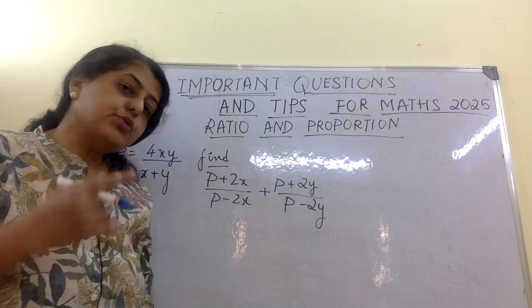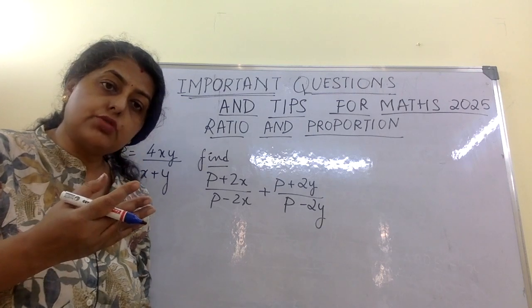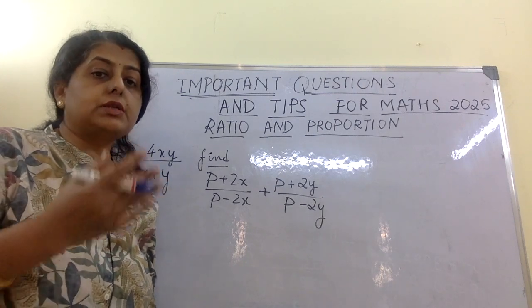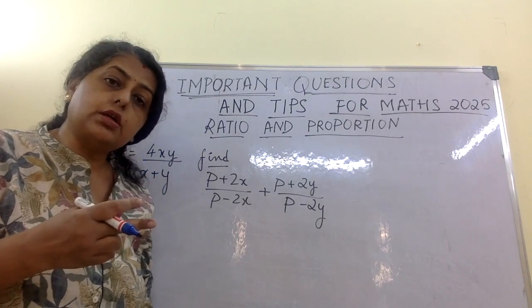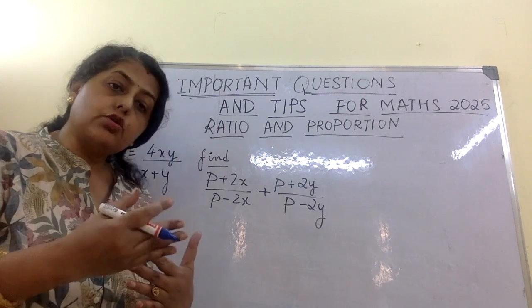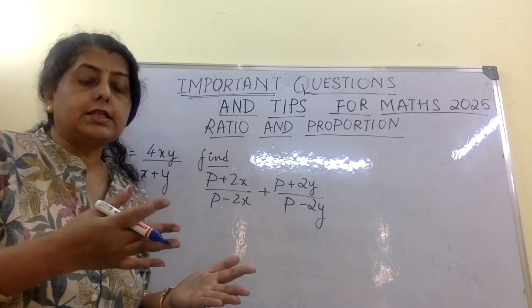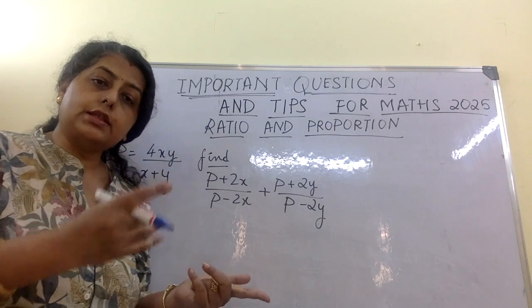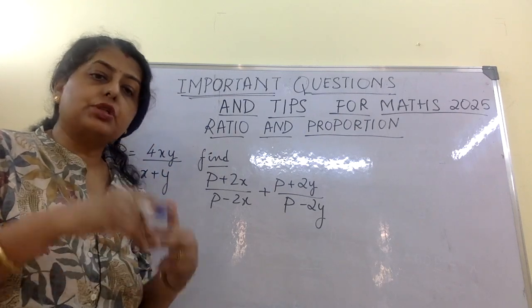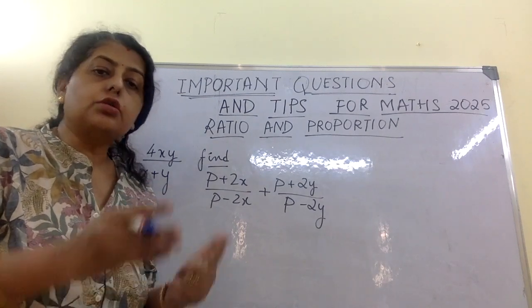There are also componendo-dividendo based questions using identities — (a+b)², (a-b), (a+b)³ kind of questions — where you apply componendo and dividendo, get an identity, and then solve. Those are two important types I'm mentioning, but you are already doing them.